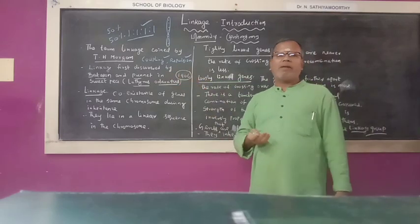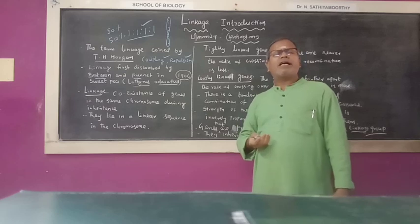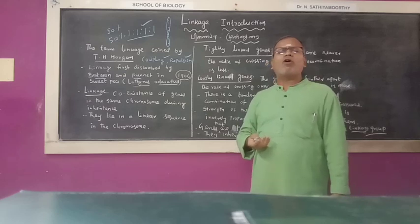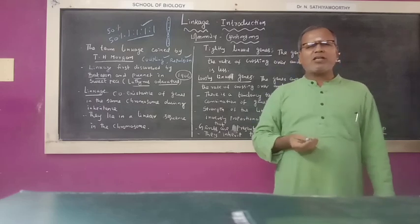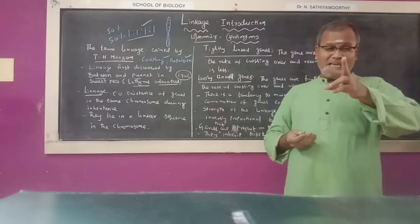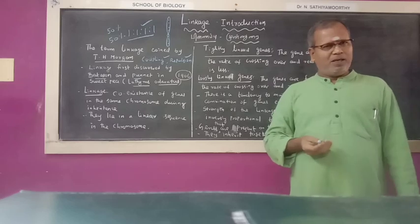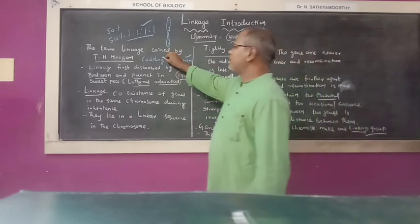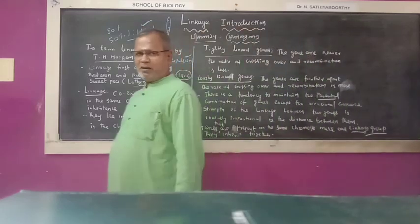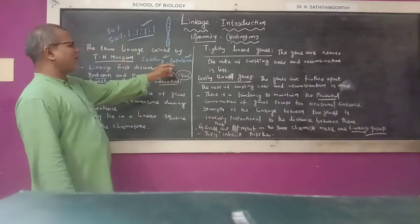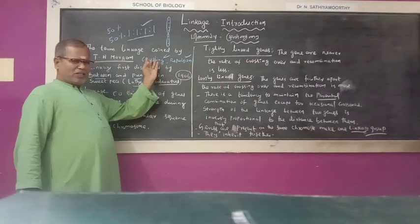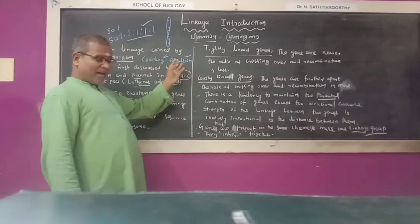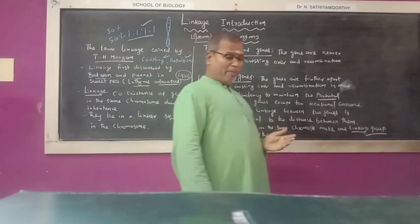However, Bateson and Punnett conducted experiments on Lathyrus odoratus, the sweet pea plant. In the coupling experiment, the ratio was 7:1:1:7. Here the parental combination was 88% and the recombination was 12%.